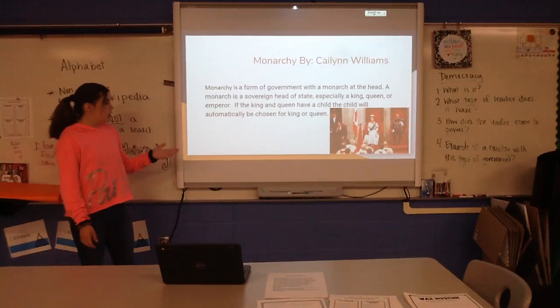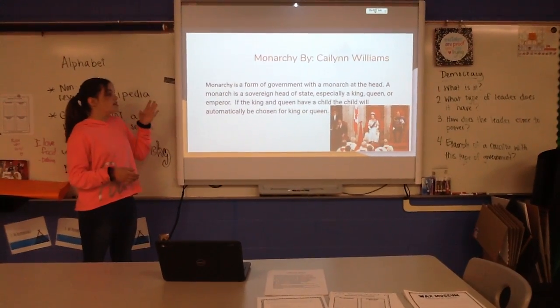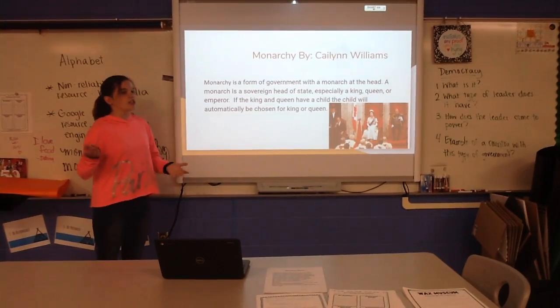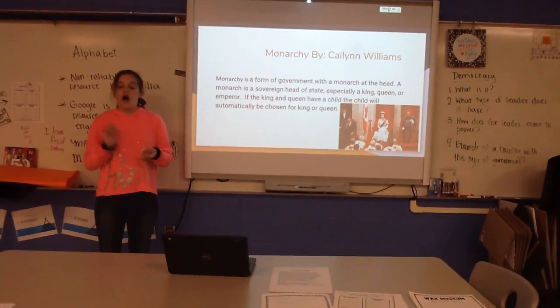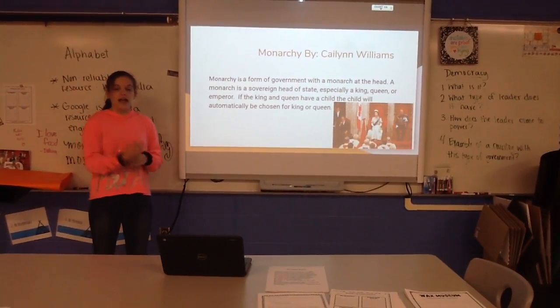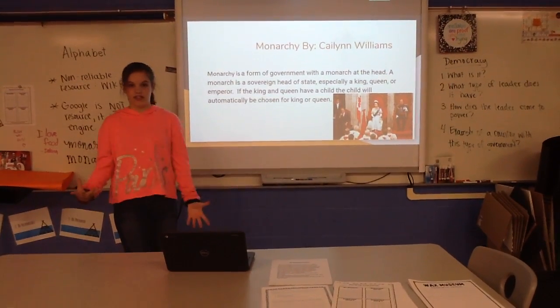And monarchy. Monarchy is a form of government with a monarch as head. A monarch is a sovereign head of state, especially a king, queen, or emperor. If the king and queen have a child, that child will automatically be elected king, queen, or emperor just because they have all the same blood.